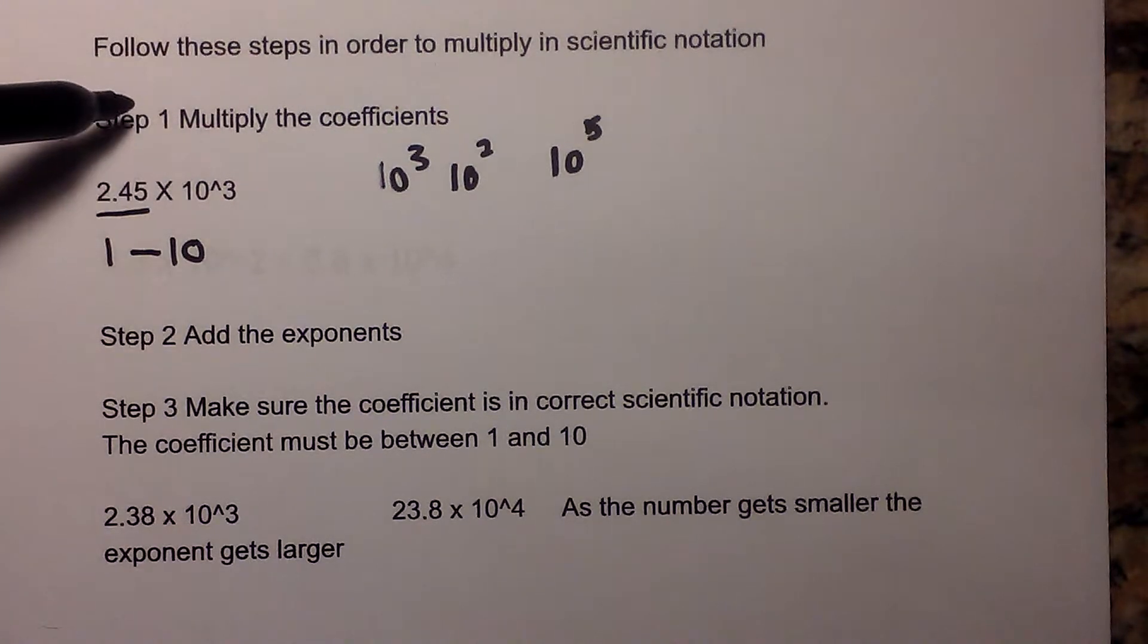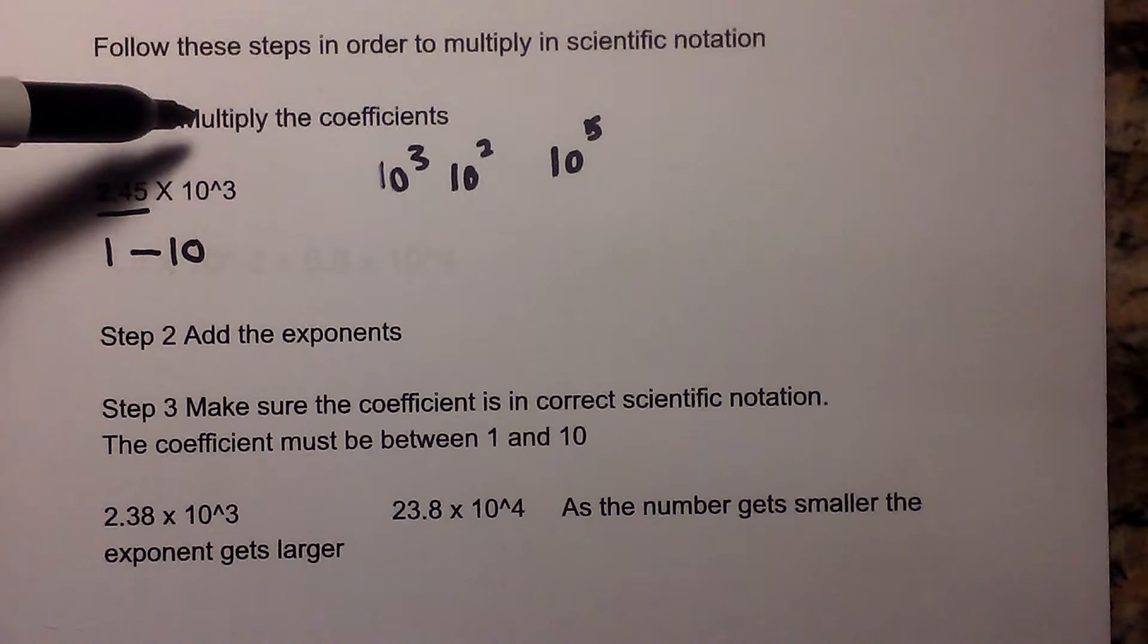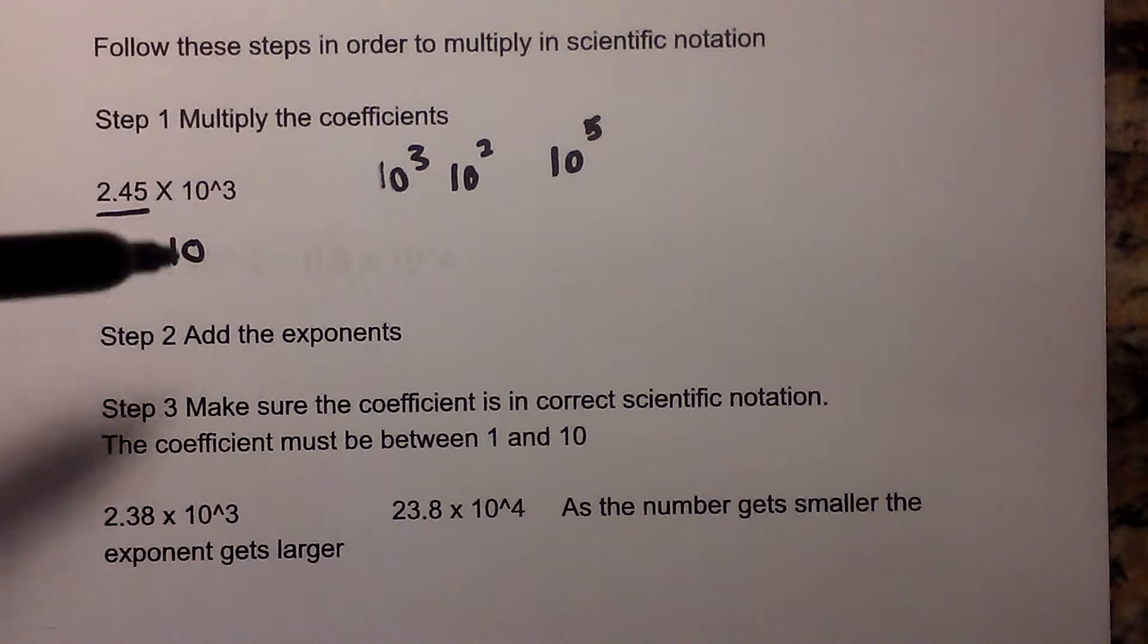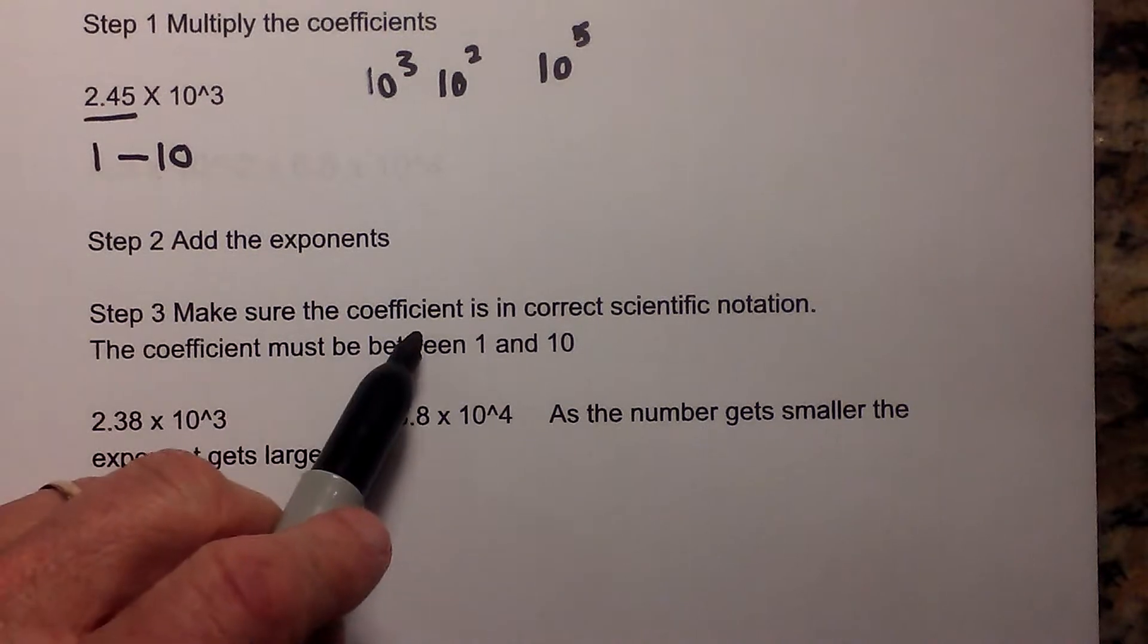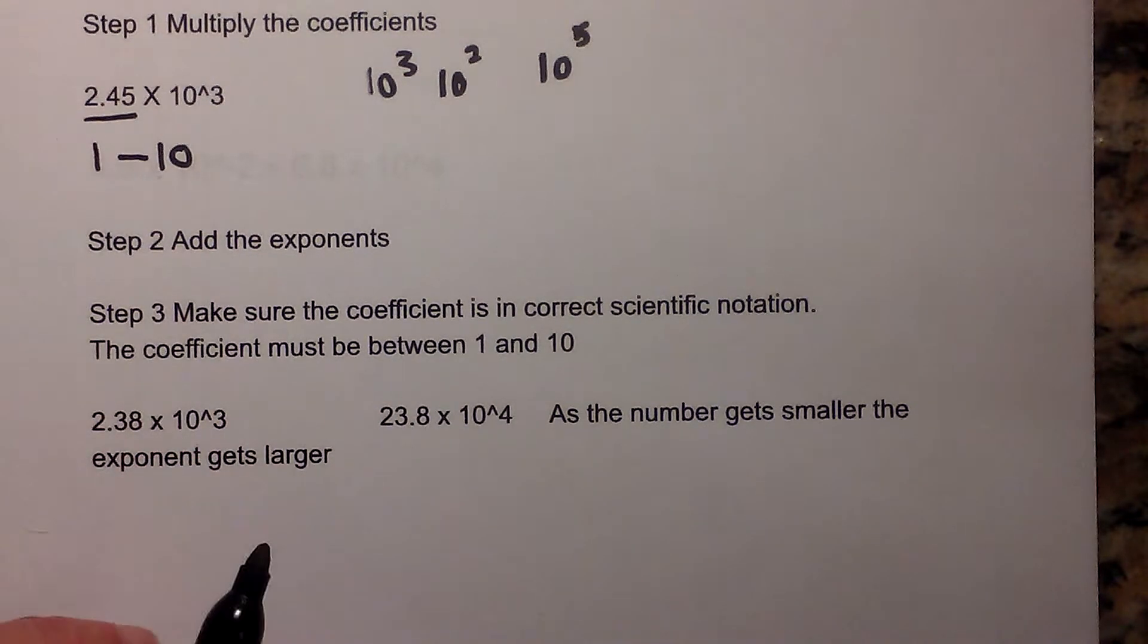Okay, so first you can kind of look at it as two steps. First, you need to multiply the coefficients, and then add the exponents. So you'll multiply the coefficients, then you'll add the exponents, and the last step you can't forget is to make sure that the coefficient is in correct scientific notation.